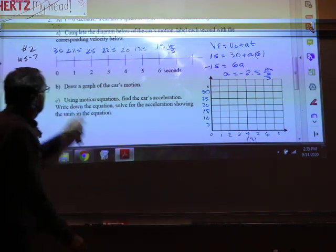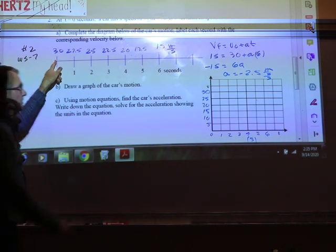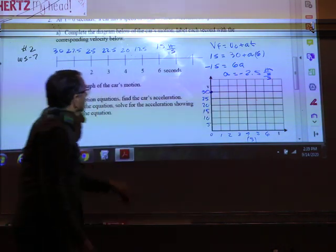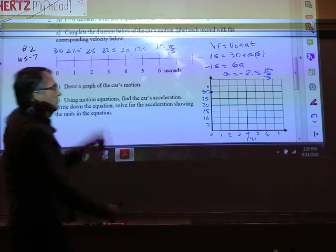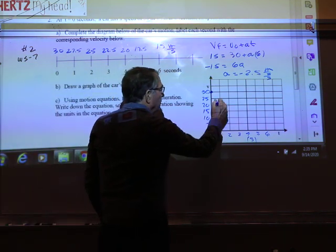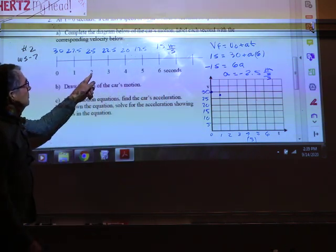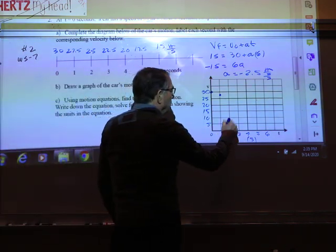Now go plot it. Time zero, 30. Time zero, you're at 30. Time 1, 27.5. Time 1, 27.5. Time 2, 25. Time 2, 25.